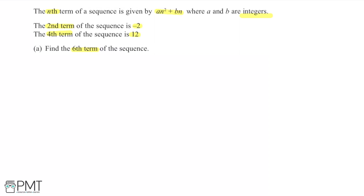In order to find the sixth term of the sequence, we can work out what the unknowns are — the integers a and b — and then substitute n equals 6 to find the sixth term. Since we have the second and fourth terms, we can substitute these values in to work out a and b, and solve a couple of equations simultaneously.